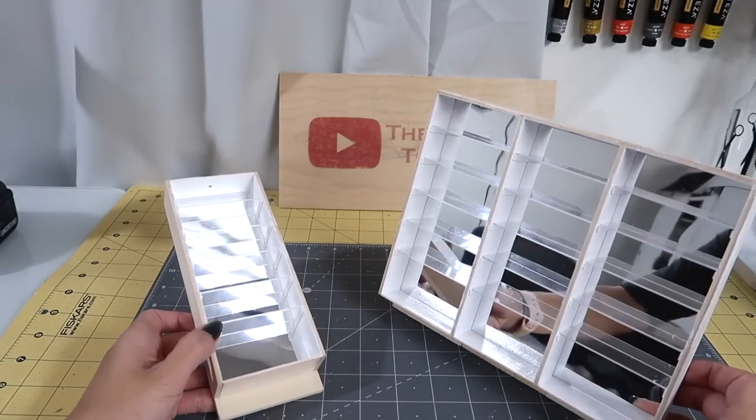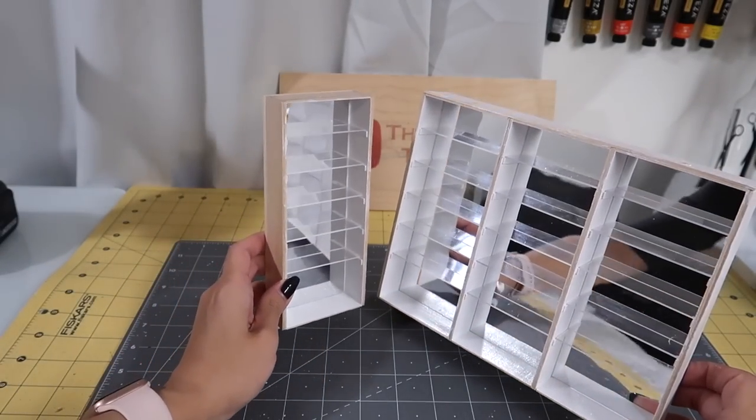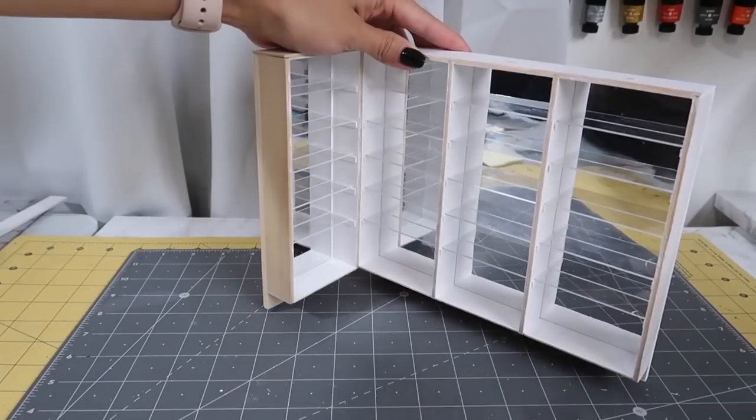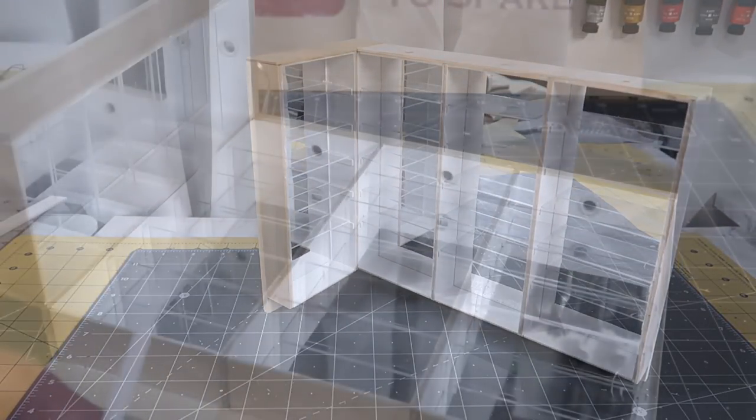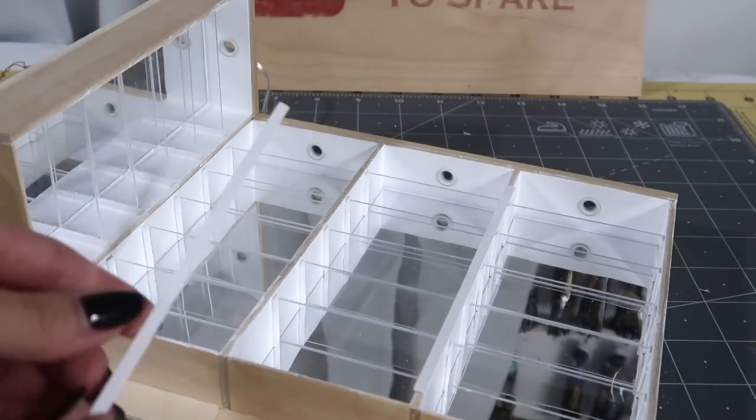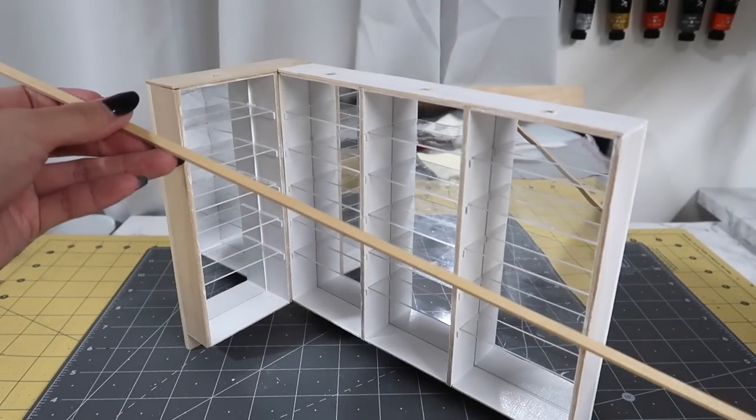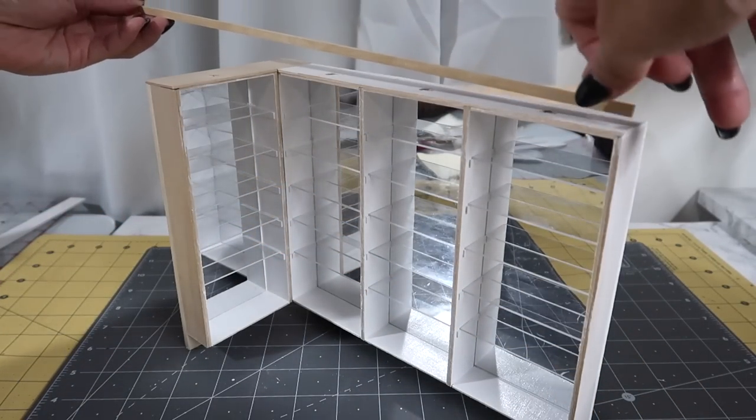I glue the smaller closet at a 90 degree angle to the big one. Before we install the lights, I added some trim to the front and the top of the closet. This will give the closet an overall cleaner look. The top trim is also where we will be hiding all the wires for the lights.